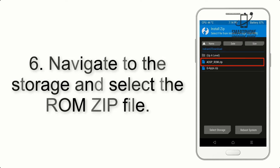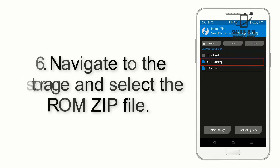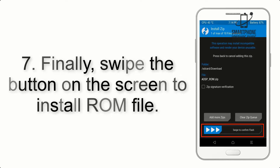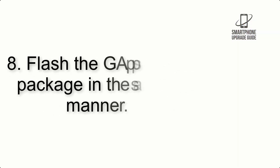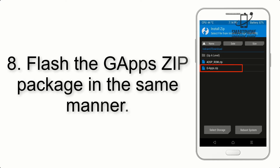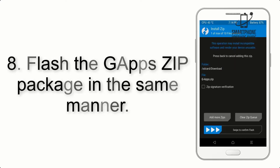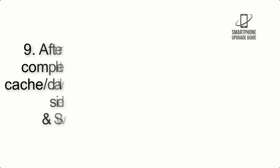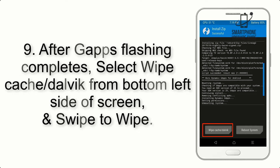Step 6: Navigate to the storage and select the ROM zip file. Step 7: Finally, swipe the button on the screen to install the ROM file. Step 8: Flash the GApps zip package in the same manner.